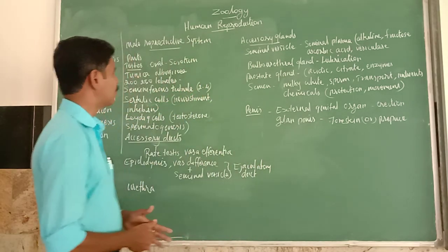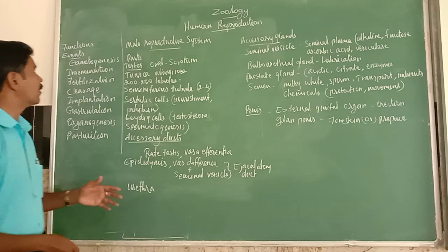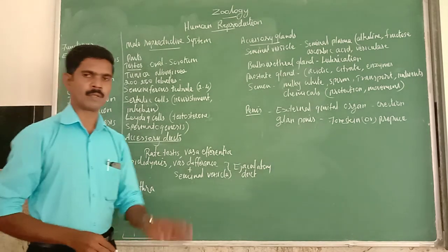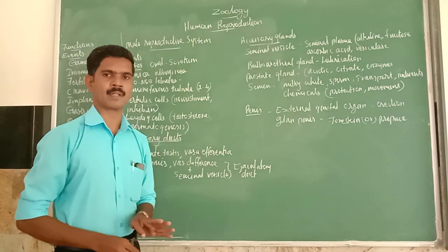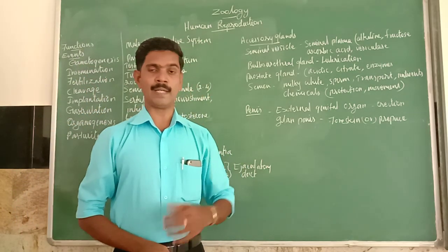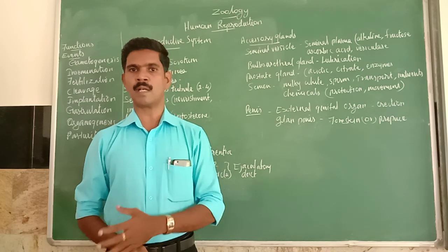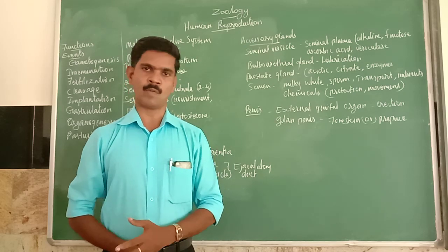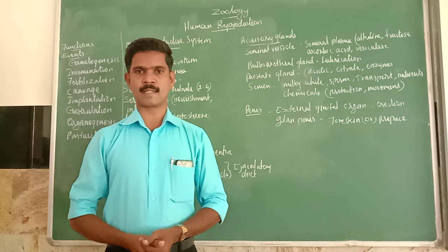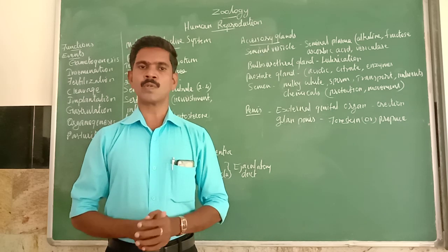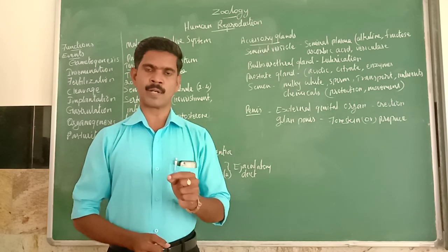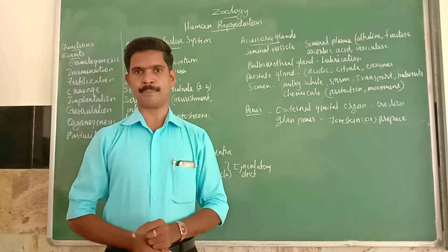Our reproductive system performs four important functions. The first function is producing the gamete. The male gamete is called sperm and the female gamete is called ovum or egg. The gamete is otherwise called a sex cell. So the production of gametes is the first major function of the reproductive system.